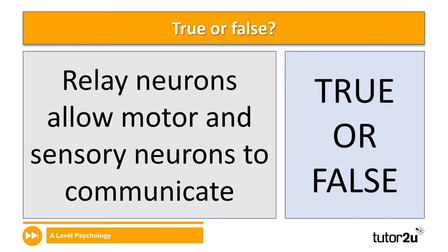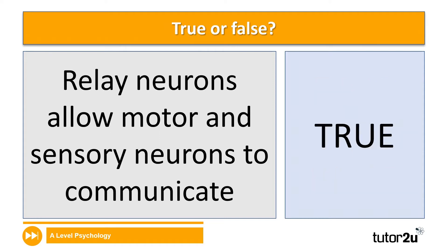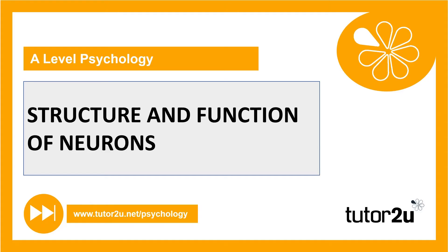Last one: relay neurons allow motor and sensory neurons to communicate — is that true or false? That final one is true. Well done for making it through the last session on the structure and function of neurons, where we covered the sensory, relay and motor neurons. Don't forget to have a quick look at the exam gold video, which will include tips for the examination on these types of questions.